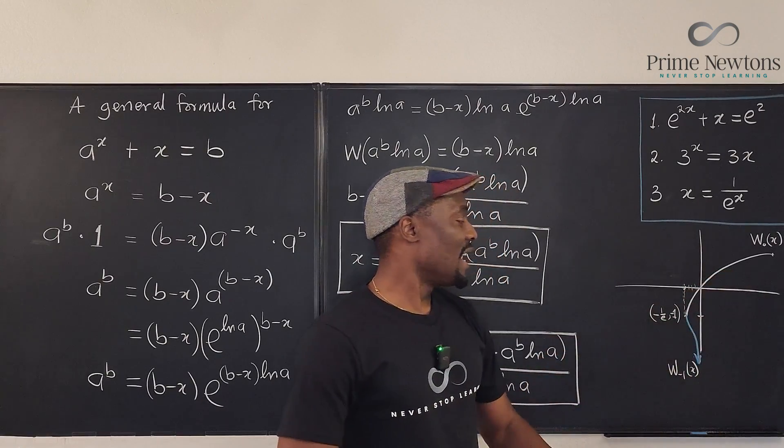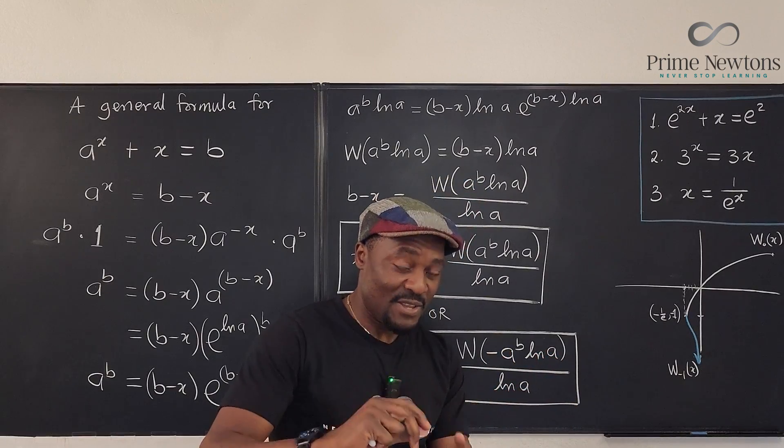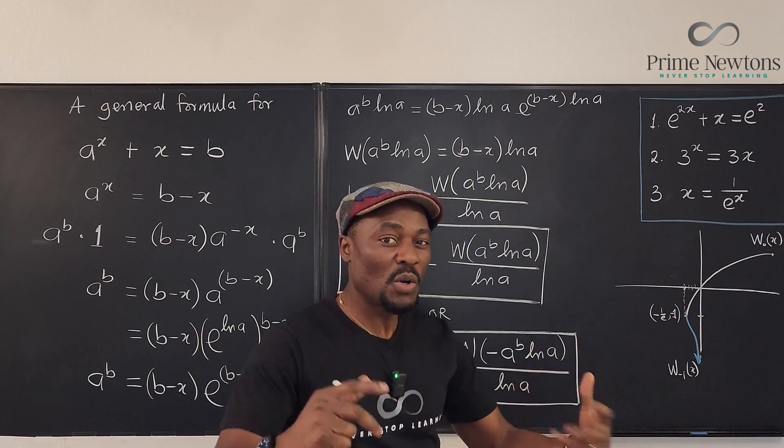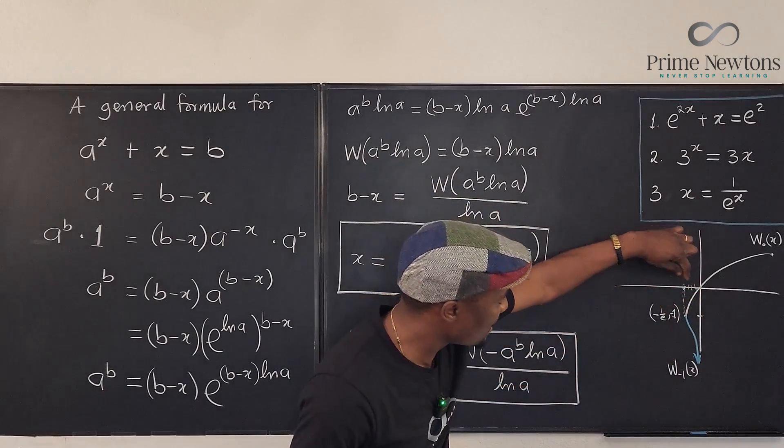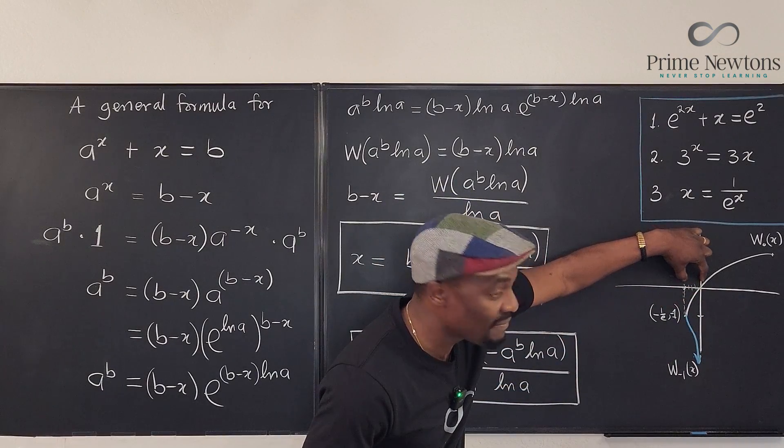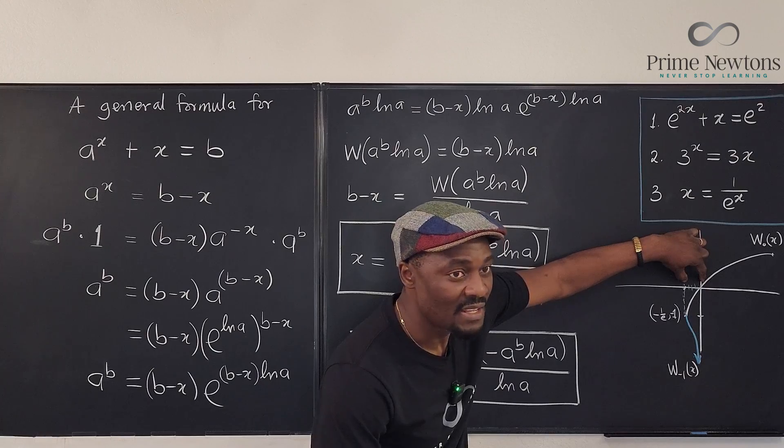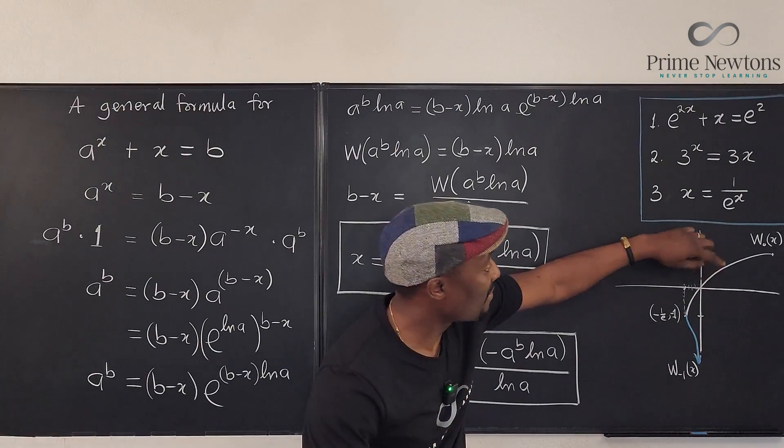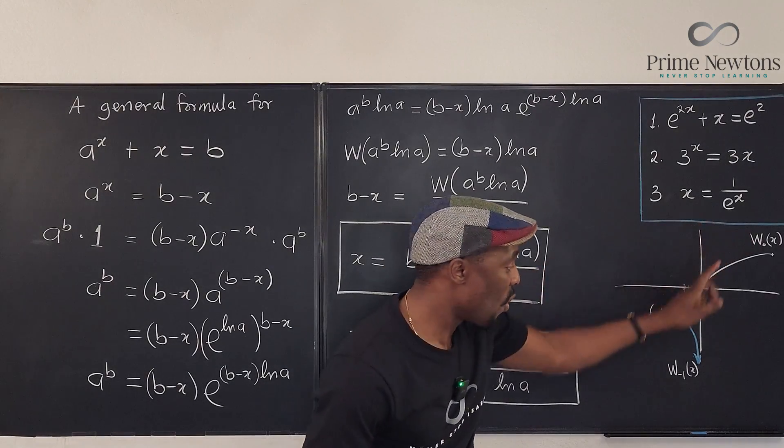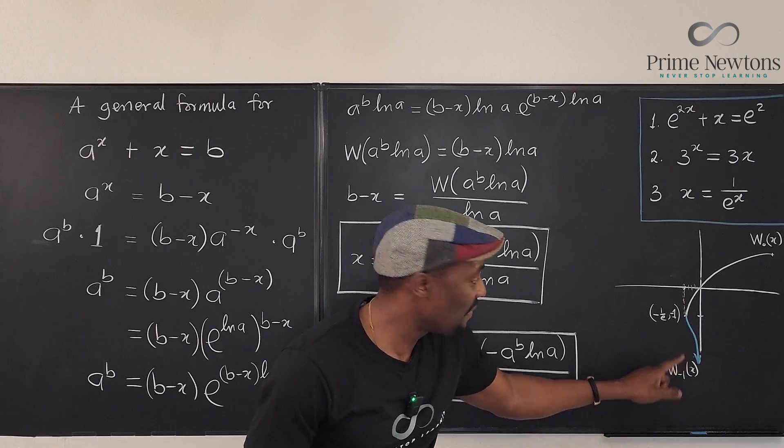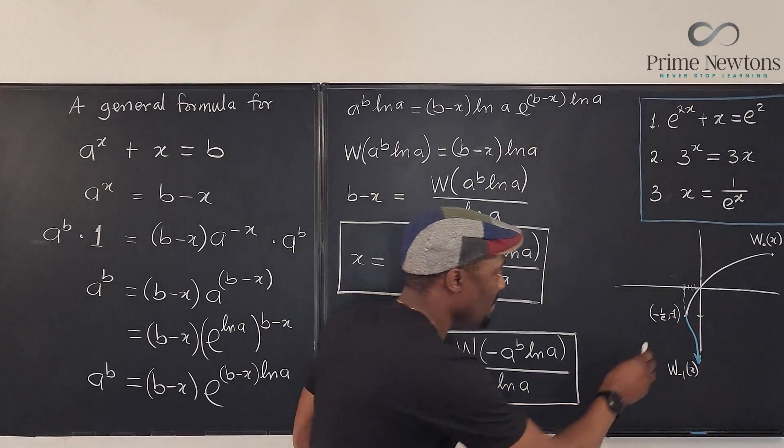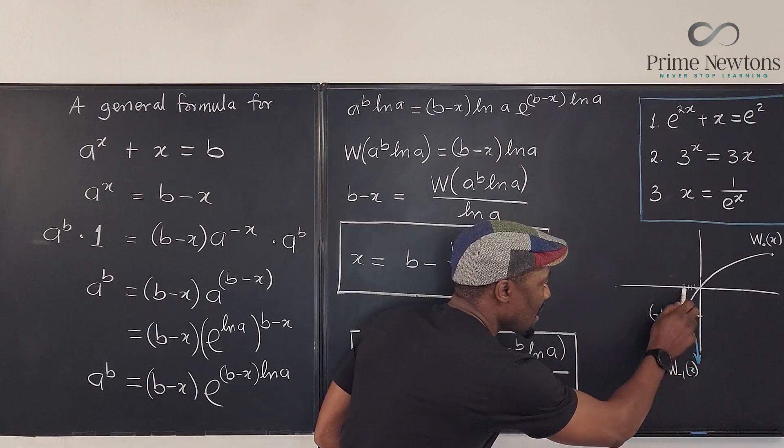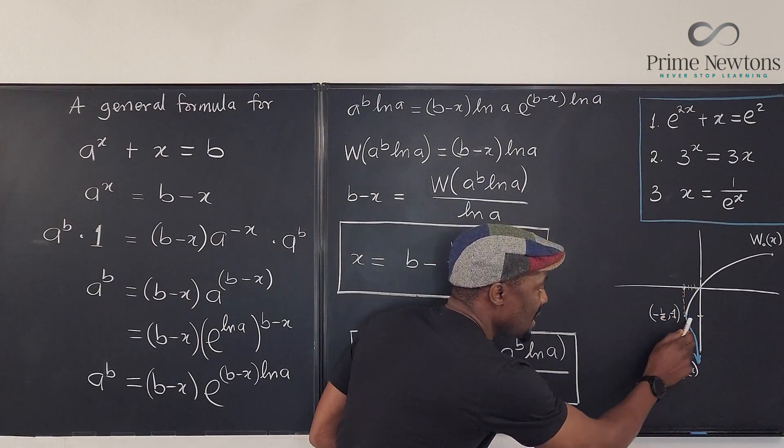But if the value x that you're trying to calculate is more likely stuck between negative one over e and zero, this tiny little gap here, if your answer is capable of coming from there, then you may get your answer from the zero branch or from the negative one branch. Now, this is the negative one branch.